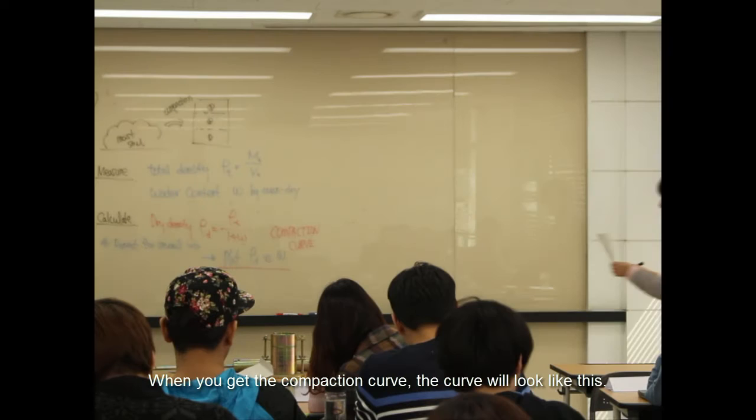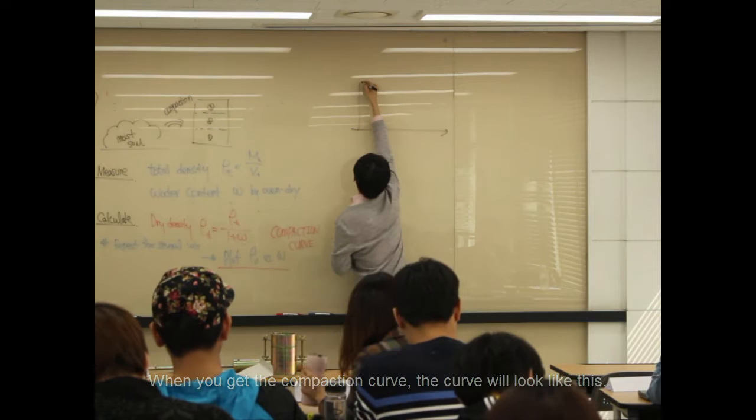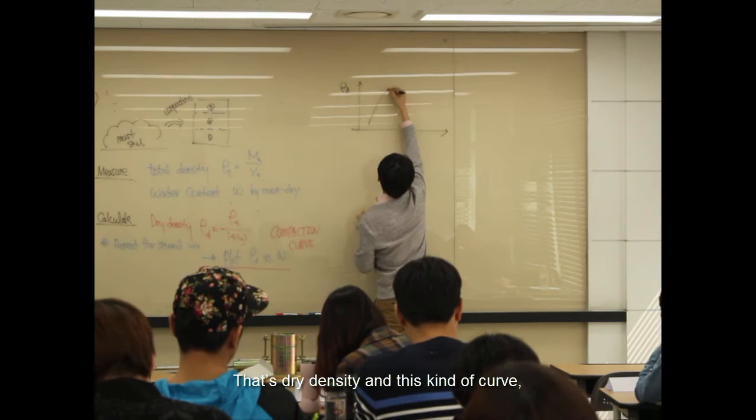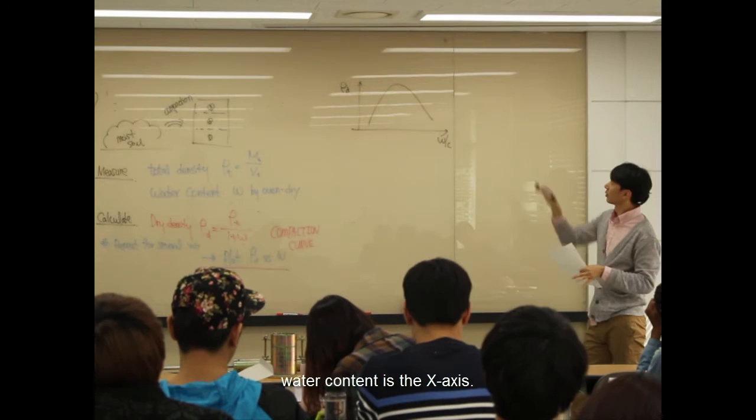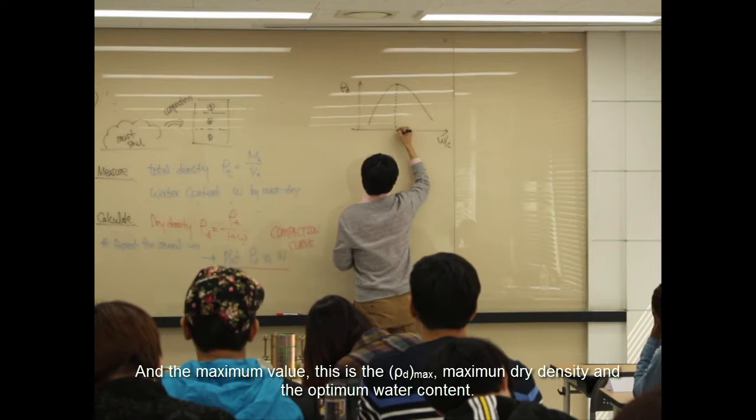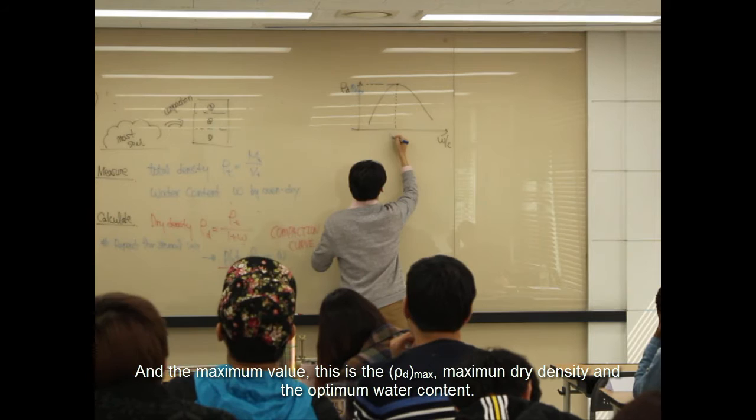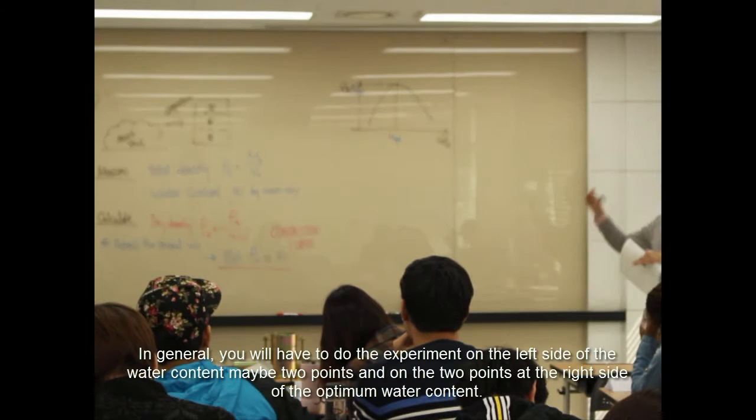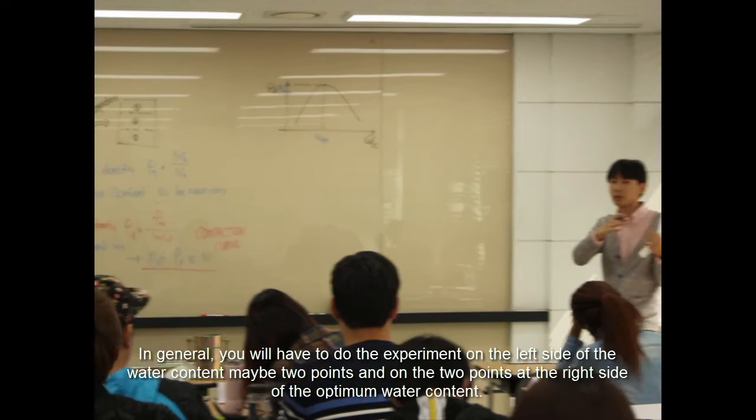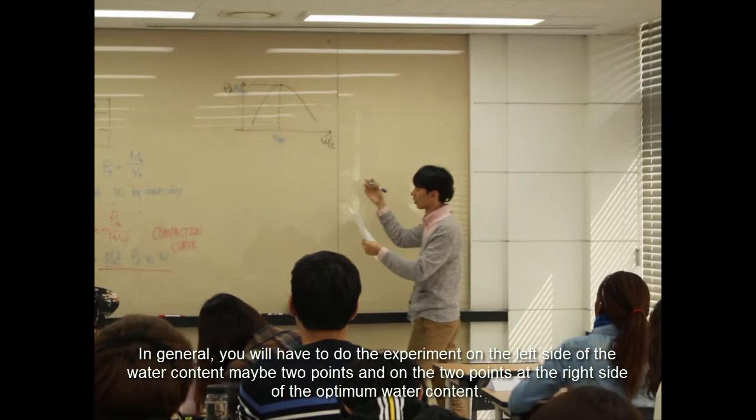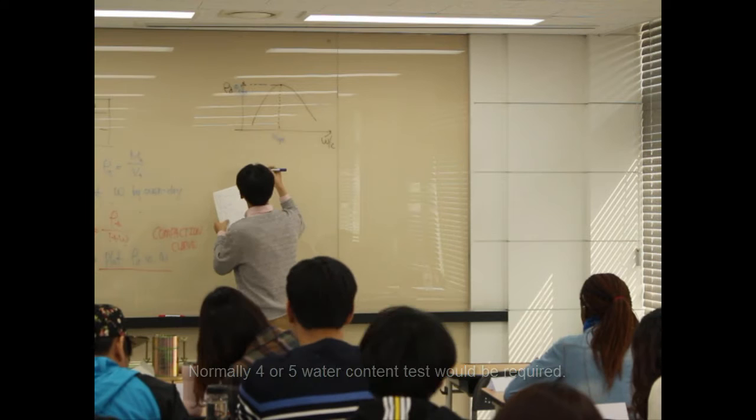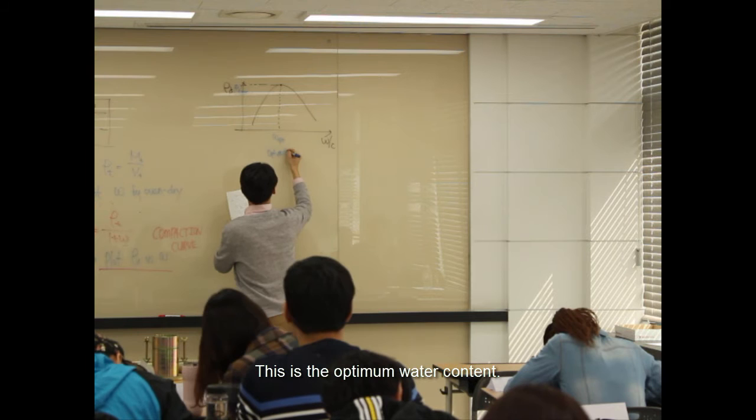The compaction curve - when you get the compaction curve, the curve will look like this. Water content on the X axis, dry density on the Y axis. You'll get this kind of curve. The maximum value is the ρ_d max, maximum dry density, and the optimum water content. In general, you have to do the experiment on the left side of the optimum water content, maybe two points, and two points at the right side of the optimum water content. So there are normally four to five water content tests. This is the optimum water content.